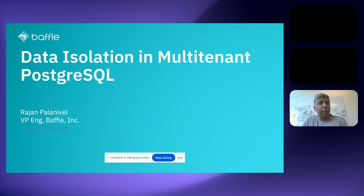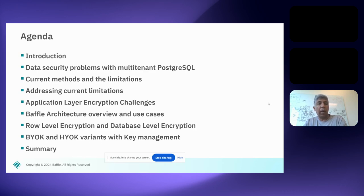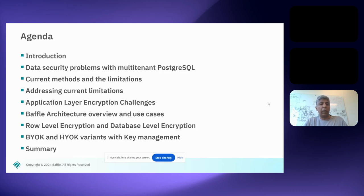Good morning, good evening everyone. I'm going to go over data isolation in multi-tenant PostgreSQL. We'll start with an introduction about Baffle and what we do, followed by the problems with multi-tenant PostgreSQL in terms of security. Then I'll cover current methods and their limitations, how application layer encryption addresses those limitations, its challenges, the solution architecture, multi-tenancy at the row and database level, key management variants like BYOK and HYOK, and a summary.